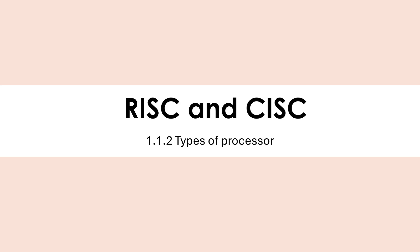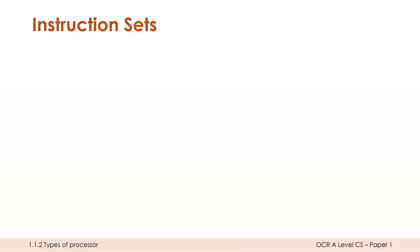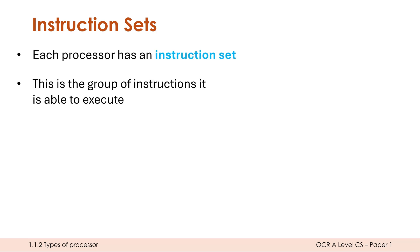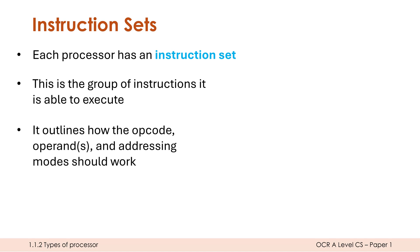In this video I'm going to take you through the differences between the RISC and CISC designs of processors. This design relates to the instruction set of these processors. An instruction set is the group of instructions a processor is able to execute, and RISC and CISC refer to how big this instruction set is designed to be.